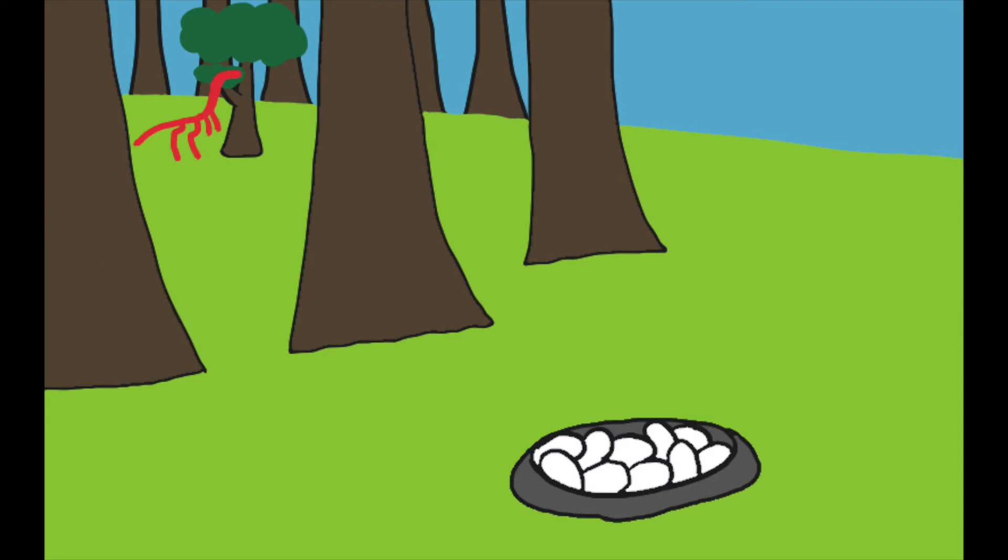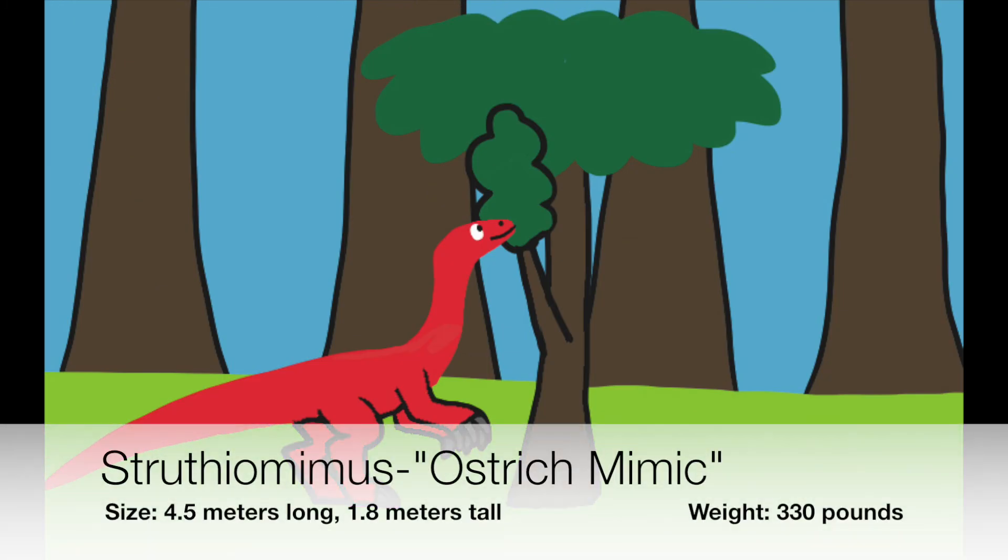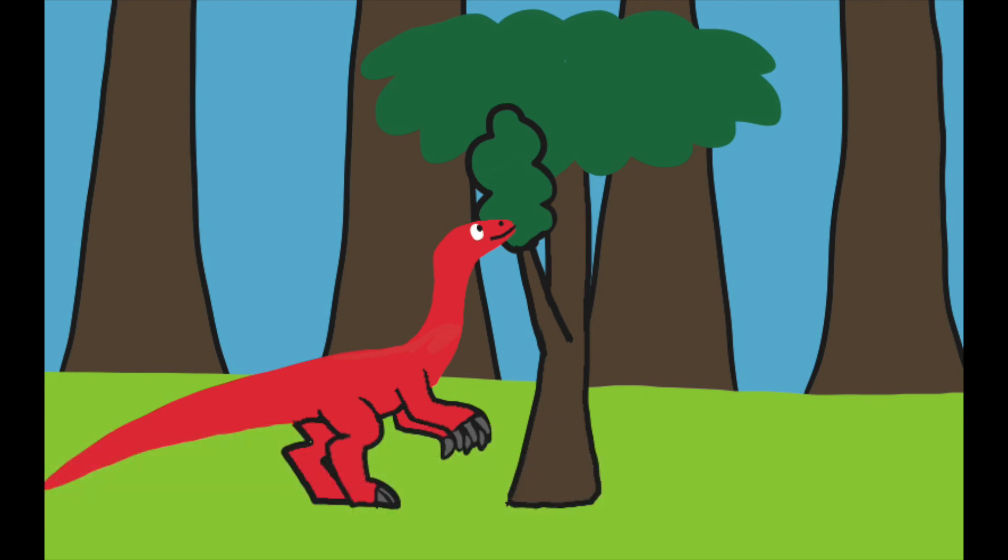Leaving a dinosaur nest unguarded can expose the eggs to egg-thieving animals, such as Struthiomimus, meaning ostrich mimic. But despite the name, he's not related to the ostriches because he's a dinosaur and not a bird. He is designed with a long neck, small skull but with big eyes, a long stiff tail, a toothless beak, and long arms.